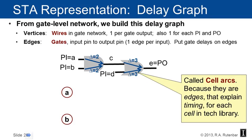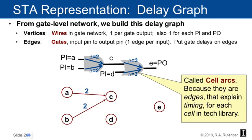Drawing out the graph: primary inputs A and B are two nodes; C and D feeding the OR gate are two more nodes (C is the output of the AND gate, D is a primary input); and E from the OR gate is another node. Now I can draw edges as the delays. Two cell arcs go from A and B respectively to output C — edges labeled 2. Similarly, two cell arcs go from C to E and D to E labeled 3.